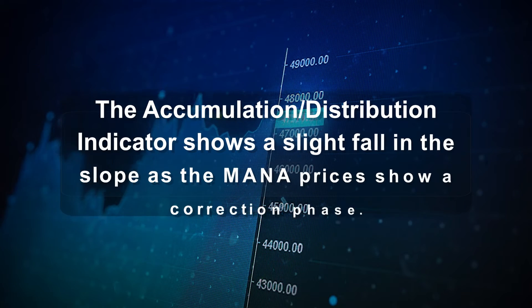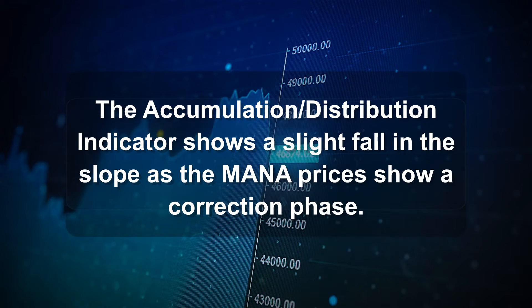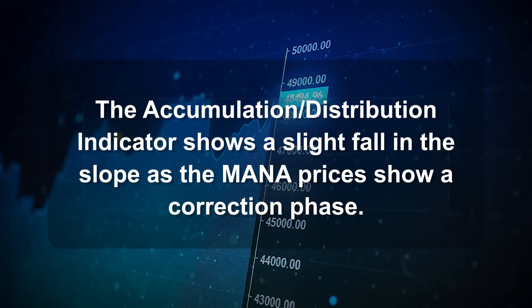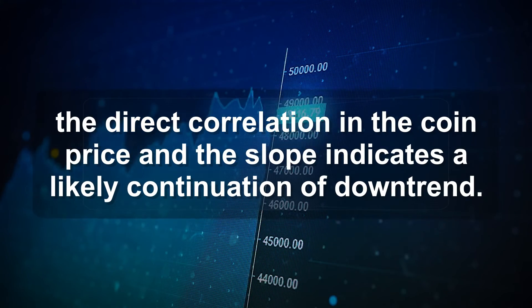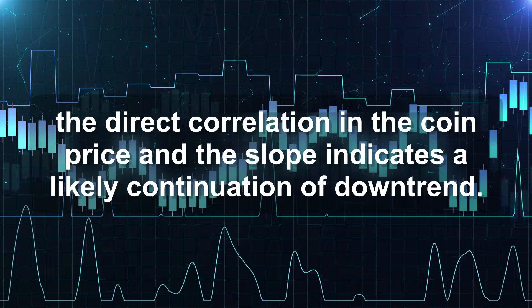The accumulation/distribution indicator shows a slight fall in the slope as the Mono prices show a correction phase. Hence, the direct correlation in the coin price and the slope indicates a likely continuation of downtrend.